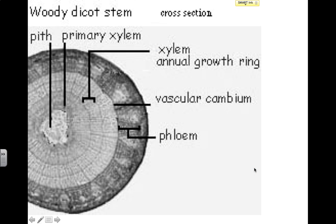This just shows you a woody dicot and some of the different structures. You have what's called the primary xylem in the middle — that's kind of what we think of as wood. You have this structure called vascular cambium, which produces more secondary xylem and secondary phloem. It's what forms the different layers of wood and the annual tree rings. Those rings are the different layers of actual xylem in the tree. We'll talk more about this as we go along.